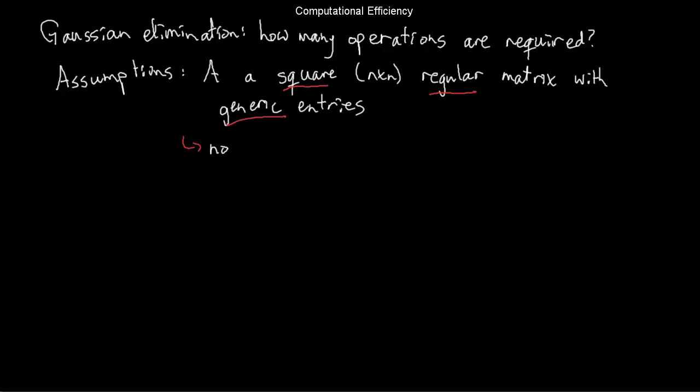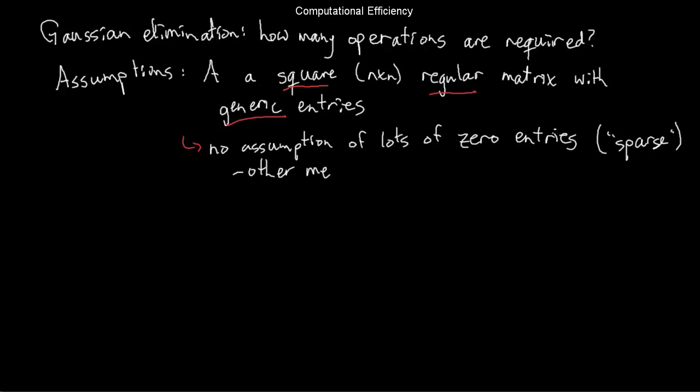In particular, I'm not going to assume that my matrix is sparse. A sparse matrix is one with a lot of zero entries. When you have a sparse matrix, other methods apply in that setup. Similarly, I won't assume that my matrix is tridiagonal, where it's definitely non-zero off of the main diagonal and the immediate superdiagonal and subdiagonal — again, other more efficient methods apply there. Instead, I'll assume just any old matrix.